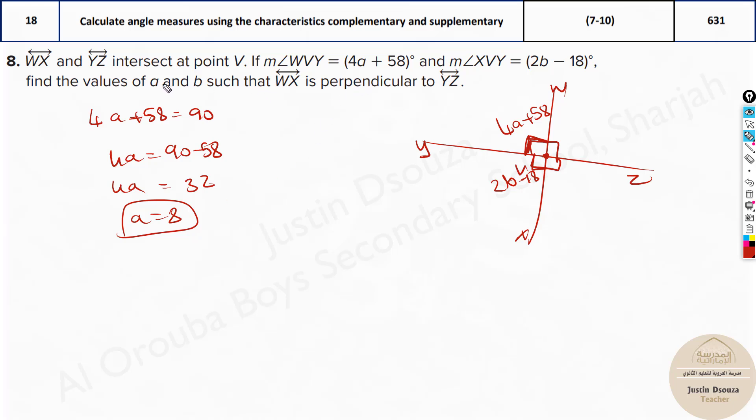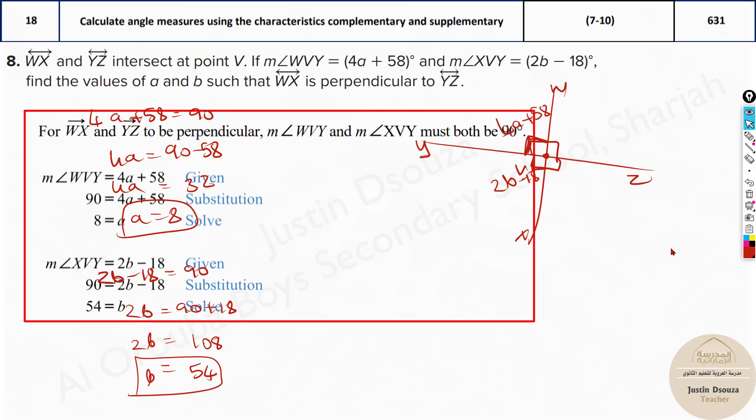But they have asked to find a itself because obviously this is 90. Don't substitute back because if you substitute back a to be 8, it will be 90 degrees. We already know that. Now from the other part, XVY, we know 2b - 18 must be equal to 90, and now solve it. It will be 2b equals 90 plus 18, that is 108, and it's 2b, so it will be 54 equals b. So the answer for a is 8 and b is 54. That's the answers.